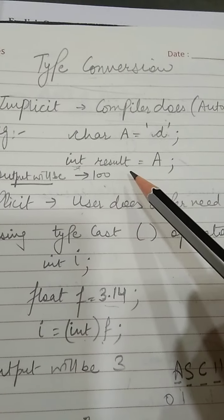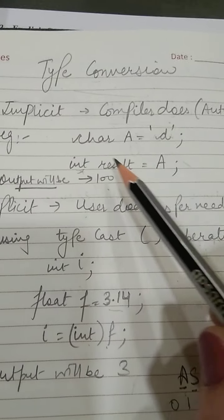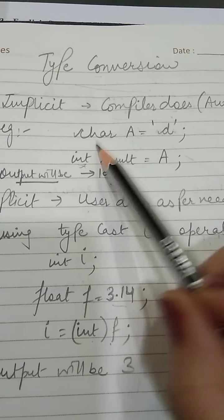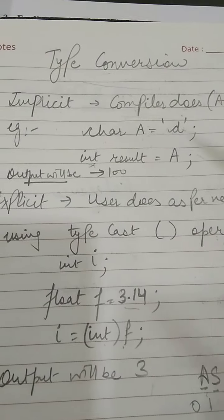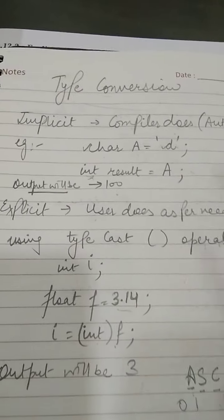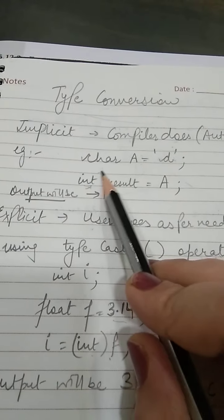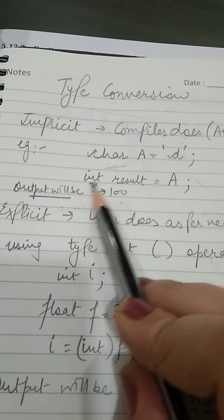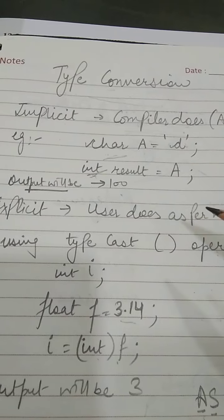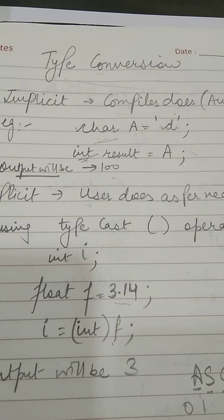Implicit type casting: the compiler does the casting always from small data types towards the big data types. It goes from smaller data types to bigger data types. From bigger data types to smaller data types, it is not possible.